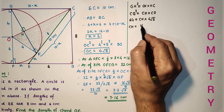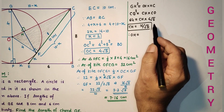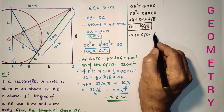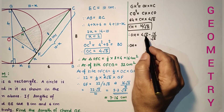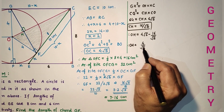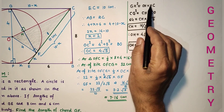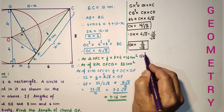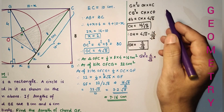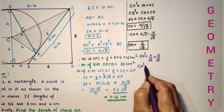So CH equals 16 by √5. OH equals CO minus CH: CO is 4√5, which is 20/√5, minus 16/√5, giving OH equals 4 by √5. Now GH² equals OH times HC: GH² equals (4/√5) times (16/√5) equals 64 by 5.